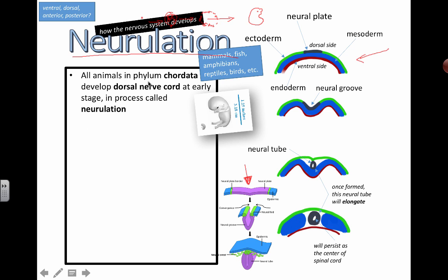All animals in the phylum chordata—this links back to our biodiversity unit. You should recognize many different phyla, animal phyla, and plant phyla. There is one that's called chordata. We belong there. It includes mammals,